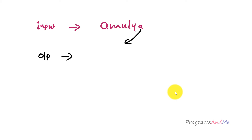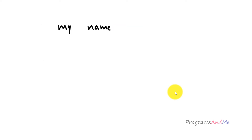For example, if the input is 'amulya', the reversed output would be 'ayulma' — a comes first, then y, l, u, m, a. If I take another example, with the input 'my name', the output should be 'eman ym' — e, m, a, n, space, y, m. So this is the expected output of this program.